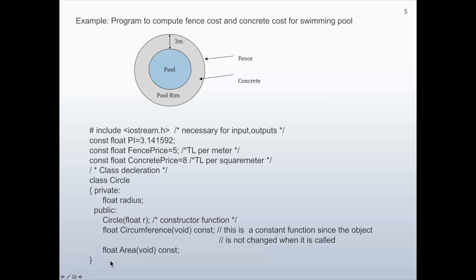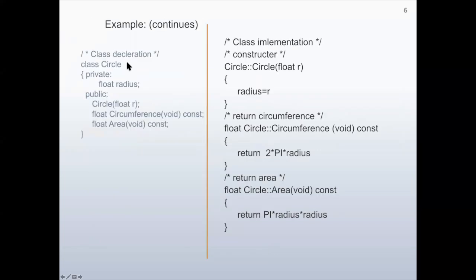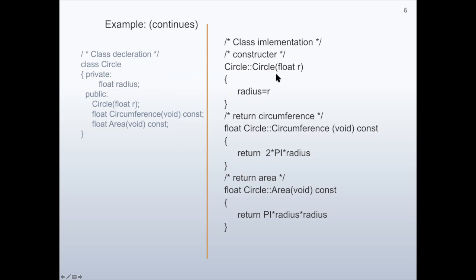After declaring the class Circle, we are going to implement the class. First we start with the constructor. Notice that first we write the name of the class, then double colons, then the name of the method — which is the constructor, so it has the same name as the class. We have input R, which is a floating number. Inside the method, we are setting the value of the private data member radius to whatever is provided as an argument to the constructor.